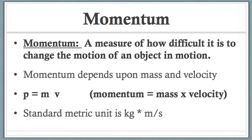Likewise, if you think of a baseball, one going 5 miles per hour versus one going 90 miles per hour, that 90 mile per hour baseball is going to have more momentum.